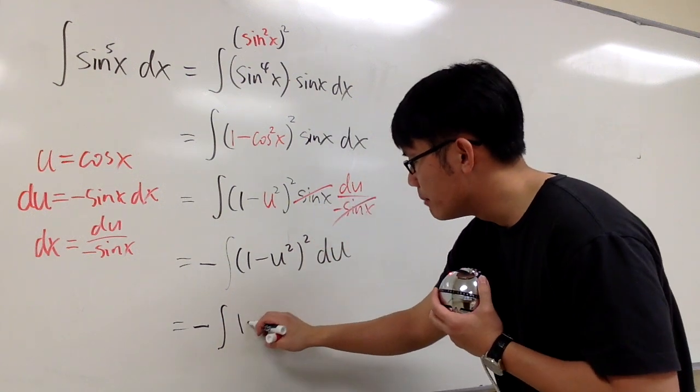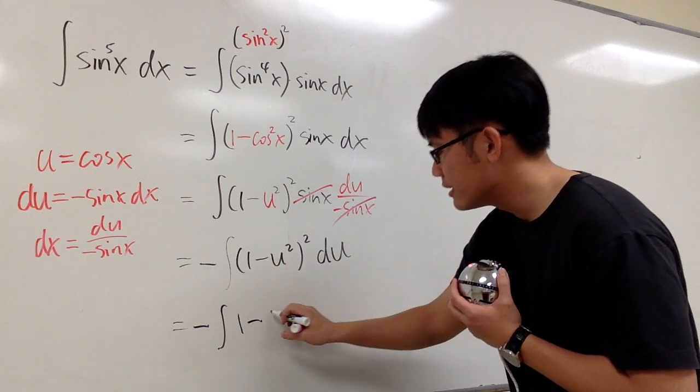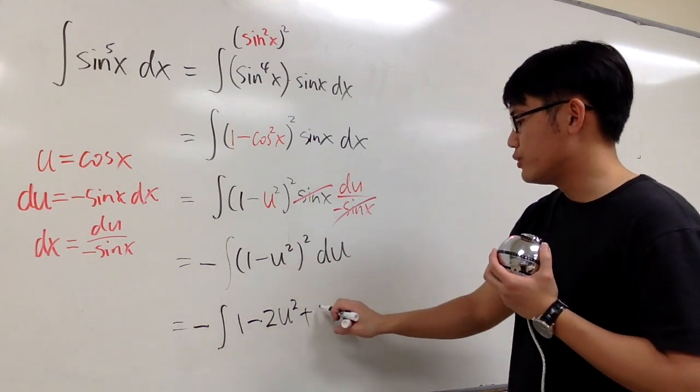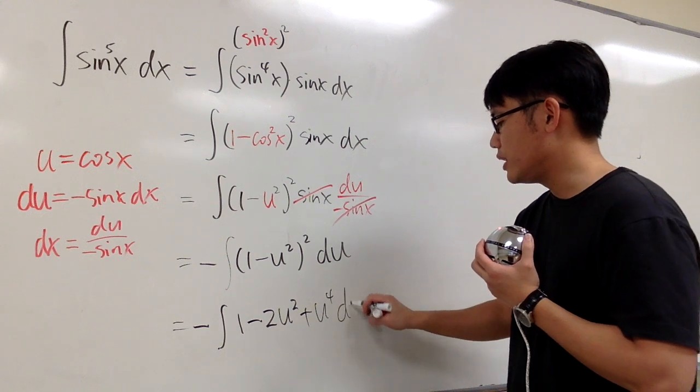And the answer for that will be 1 minus 2 times this and that. So it would be 2u squared, and then plus this square, which is u to the fourth power, du.